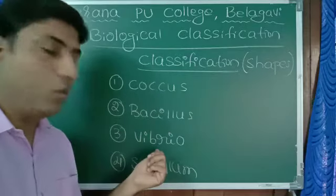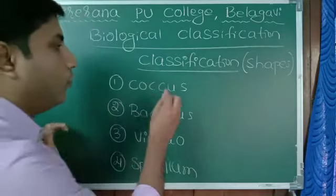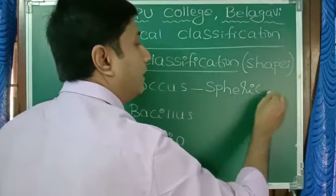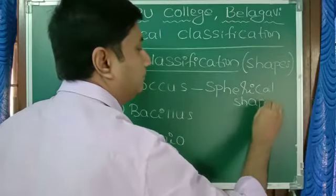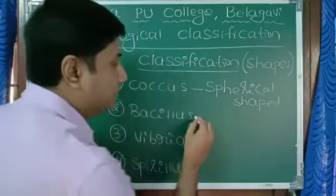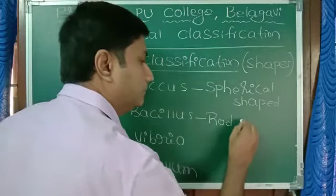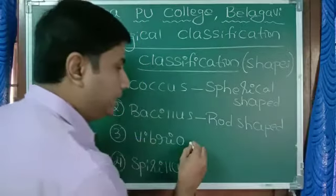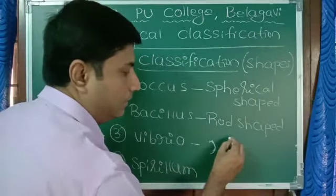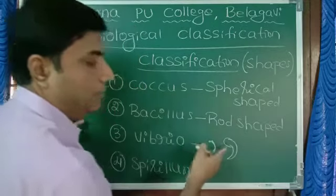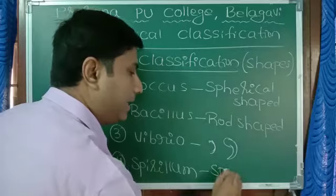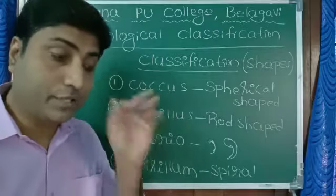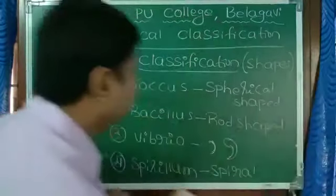So these are the four types of bacteria based on their shape. Coccus, plural is cocci; Bacillus, plural is bacilli; Vibrio and Spirillum. Coccus means they are spherical shaped. Bacillus means rod shaped. Vibrio means comma shaped, like this comma. And Spirillum means spiral shaped. These are the classification of bacteria based on their shapes.